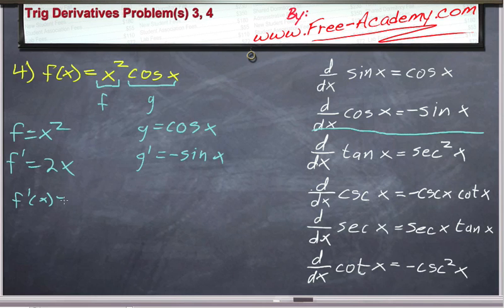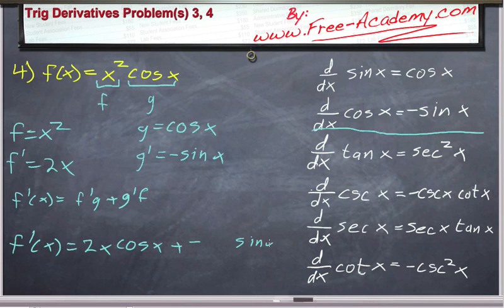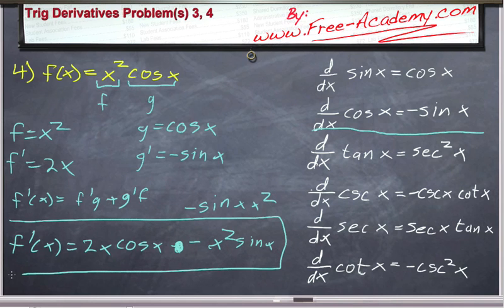So f prime of x is going to equal f prime g plus g prime f, our friendly product rule. So let's plug all the different values in. f prime is 2x times g, which is cosine of x, plus g prime negative sine of x times f, which is x squared. Notice in that very last step here I just immediately rewrote it. Instead of sine of x times x squared, I wrote it as x squared sine of x, and that positive sign becomes irrelevant. So there we have the derivative of problem 4.